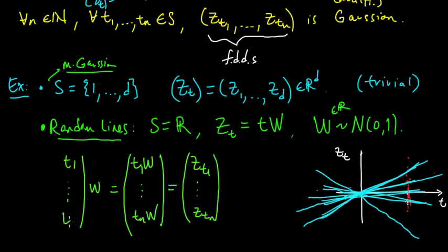We can factor out the W here if we think of W as a one-by-one matrix and this as an n-by-one matrix. We can apply the affine transformation property of multivariate Gaussian random variables in a sort of peculiar way, thinking of this as a one-by-one multivariate Gaussian. We multiply by a matrix, and by the affine property, that is also multivariate Gaussian.